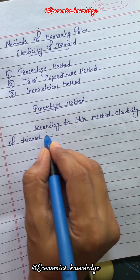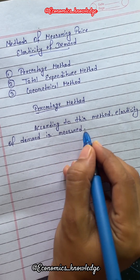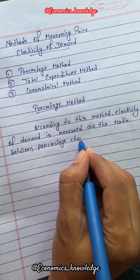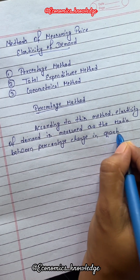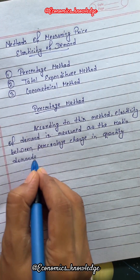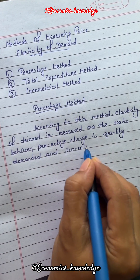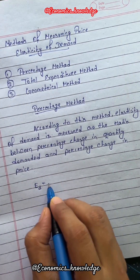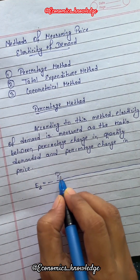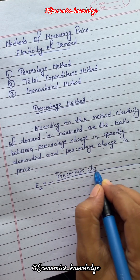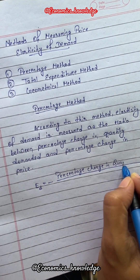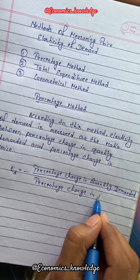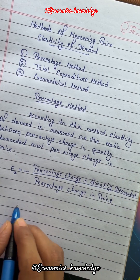The percentage method is the most commonly used method of measuring price elasticity of demand. According to this method, elasticity of demand is measured as the ratio between percentage change in quantity demanded and percentage change in price. The formula is: Ed equals minus percentage change in quantity demanded upon percentage change in price. The minus sign indicates an inverse or negative relationship between price and quantity demanded.